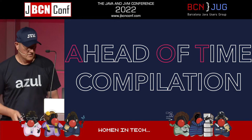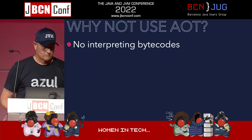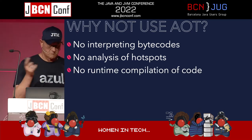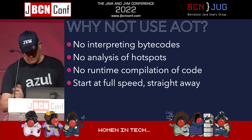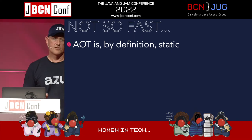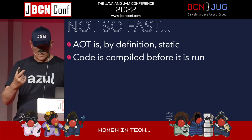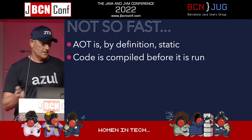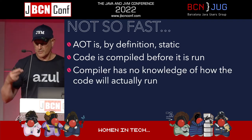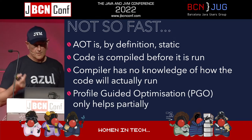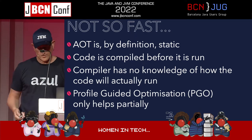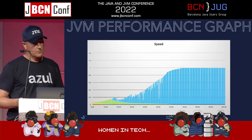Why not use AOT - Ahead-of-Time compilation? With AOT we don't have to interpret bytecode, there's no hotspot analysis, no runtime compilation - you can start at full speed. GraalVM native image does that. But AOT is by definition static: you compile before the code runs. The compiler has no knowledge of the code that actually runs afterwards, so it can't do the same optimizations as tiered compilation.